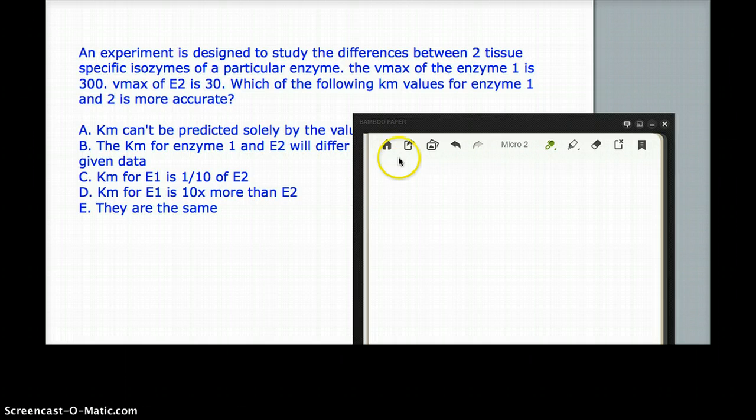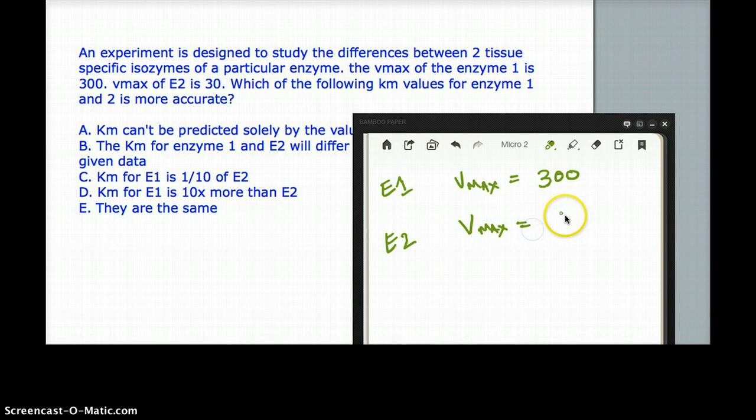The Vmax of enzyme 1, so let's say this is enzyme 1, Vmax of this enzyme is 300. And the Vmax of enzyme 2, so they're isoenzymes, right, they're very similar but they're not exactly the same. The Vmax of enzyme 2 is about 30.